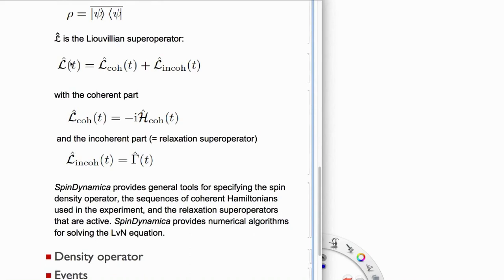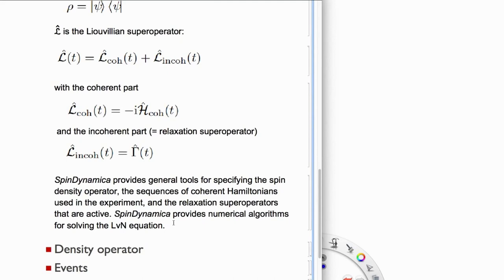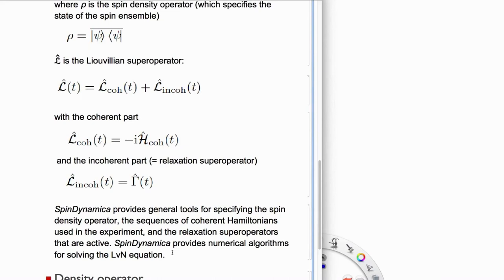The incoherent part of the Liouvillian is given by the relaxation super operator, denoted gamma-hat. For efficiently fast-fluctuating interactions, this captures relaxation. There's also a contribution from slow motion or chemical exchange, but that won't be covered here. All these objects can be specified in SpinDynamica, which then solves the Liouville-von Neumann equation using algorithms chosen internally according to the type of evolution being calculated.